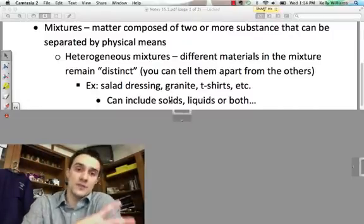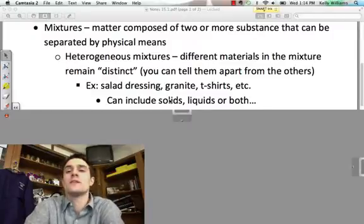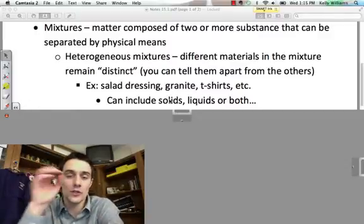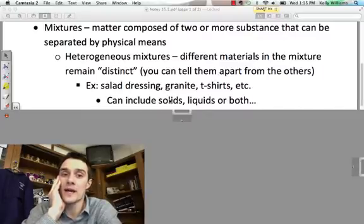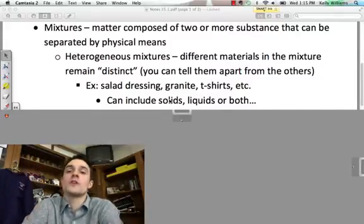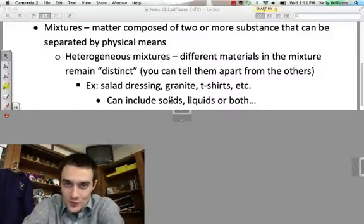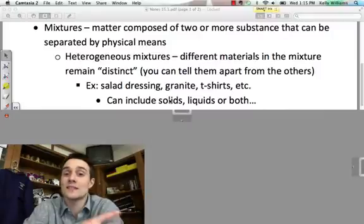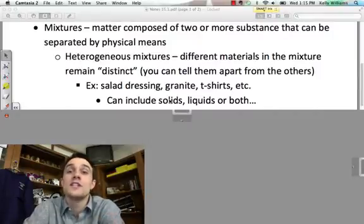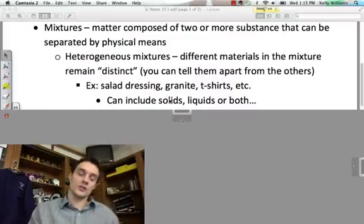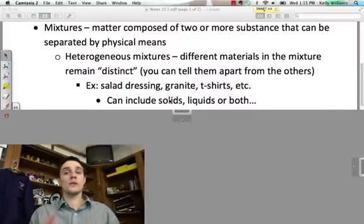And mixtures, the definition is matter that's composed of two or more substances that can be separated by physical means. Not chemical means, but by physical means. So, you can physically separate the two or more substances that make up that matter. A heterogeneous mixture, say it after me, heterogeneous mixture, is composed of different materials that remain distinctly different from one another. So, you can actually tell that there's different substances making up that mixture. Good examples here would be like salad dressing, a piece of granite rock, t-shirt. And it can include both solids, liquids. It can be just a solid, like a t-shirt, or it could be just a liquid. Or it could be both of them kind of mixed together.